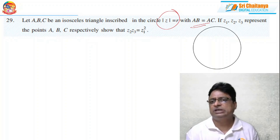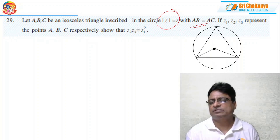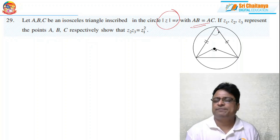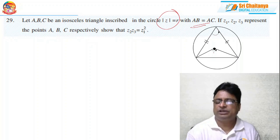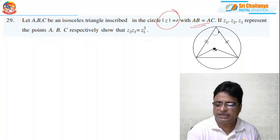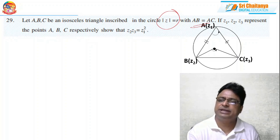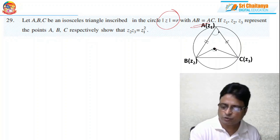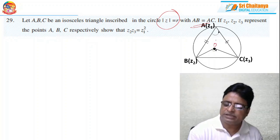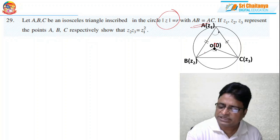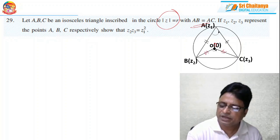Here is my diagram — a circle of radius r with the isosceles triangle inscribed. This is my circumcenter. Since AB equals AC, the triangle is isosceles. The vertex angle at A gives an inscribed angle, so the central angle BOC equals 2A. Without loss of generality, consider the circumcenter as origin, so OA equals OB equals OC equals r. I consider A as Z1, B as Z2, C as Z3. Apply Coni's theorem.